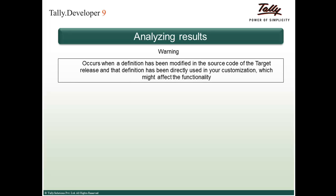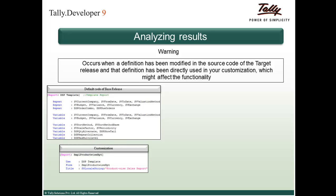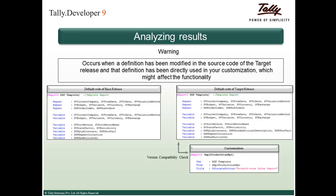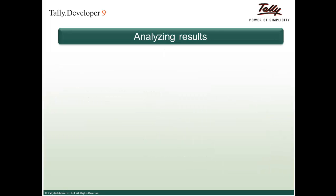The next type of result is the warning, which occurs when a definition has been modified in the source code of the target release and that definition has been directly used in your customization, which might affect functionality. For example, in base release 4.8, the widely used report definition DSP Template is used in the customization report SMPL ProductWise RPT. The target release shows that a variable DSP Show Additional Description is added in the report DSP Template. Since DSP Template is used in our customization, the warning 'Description report DSP Template is modified in the target version' is displayed.